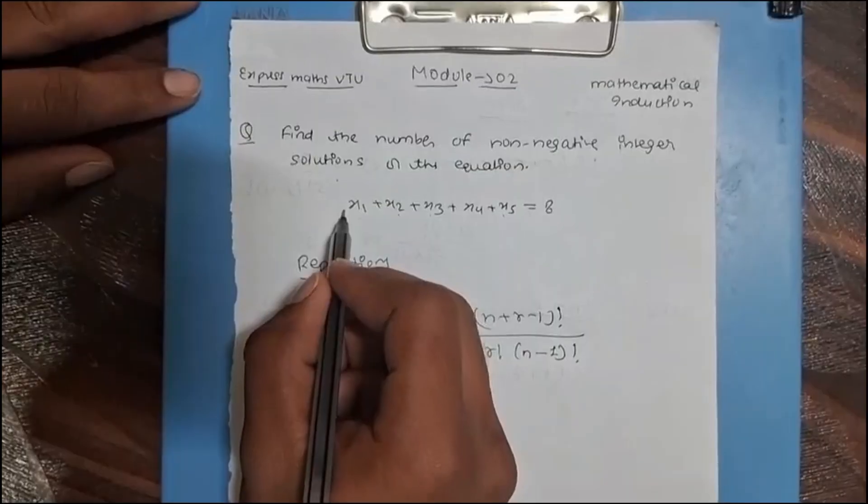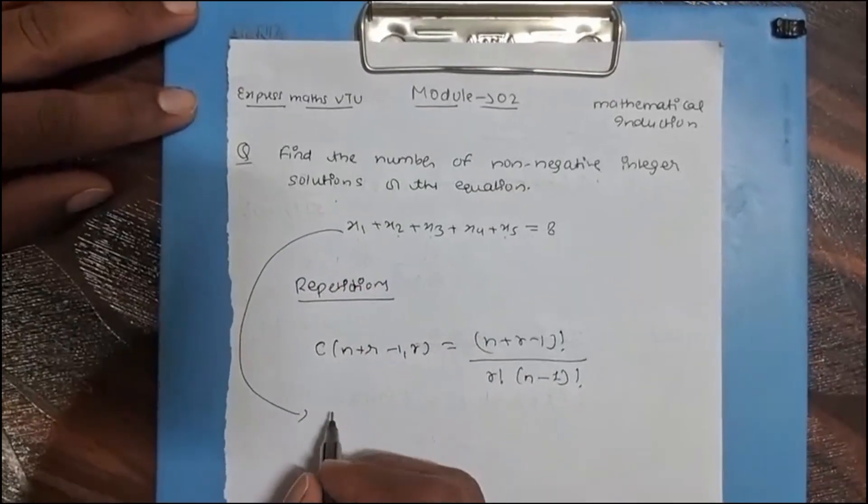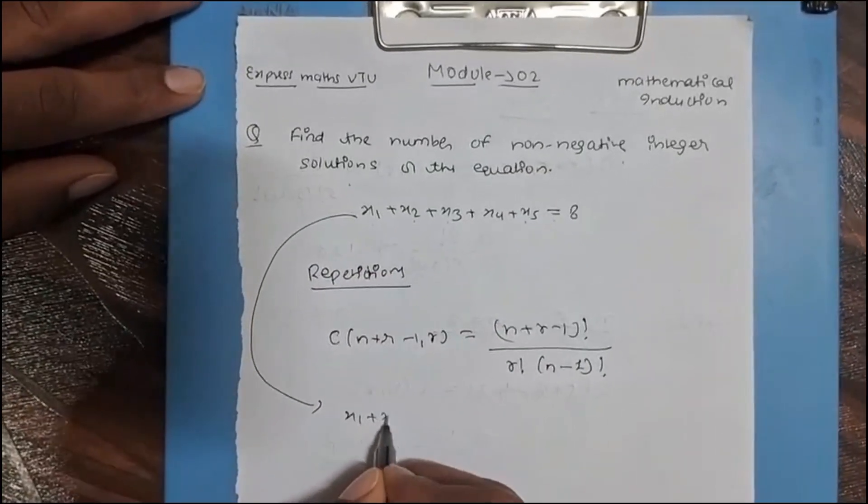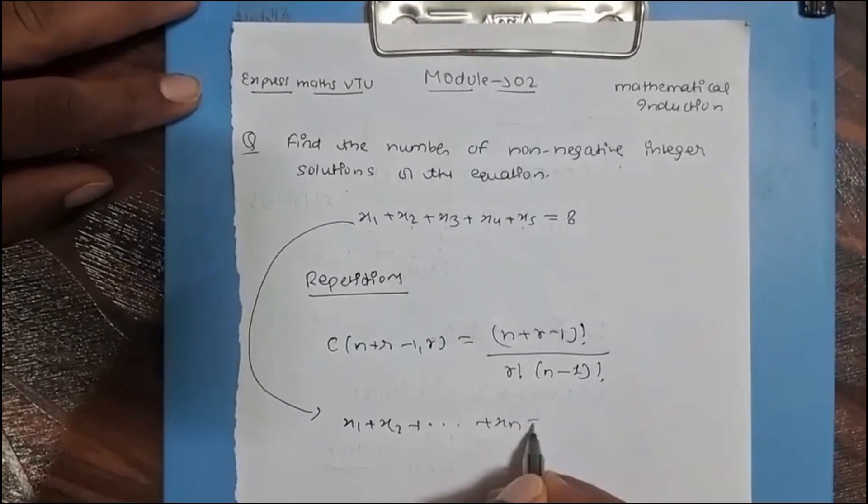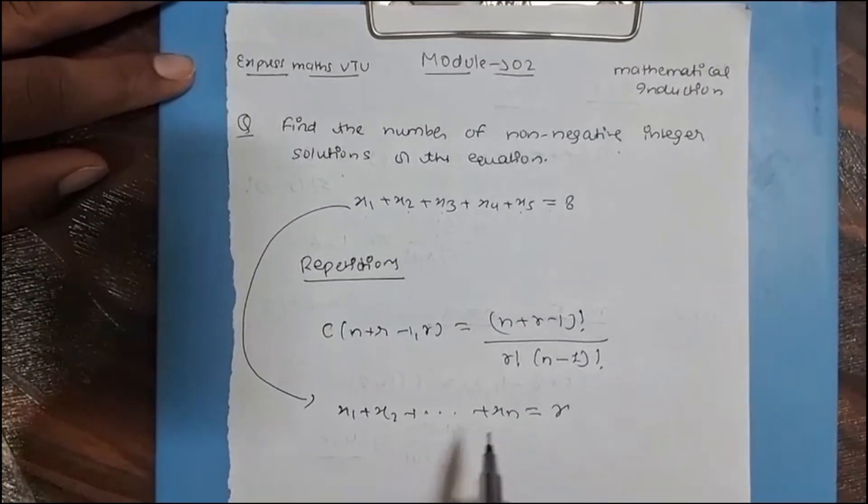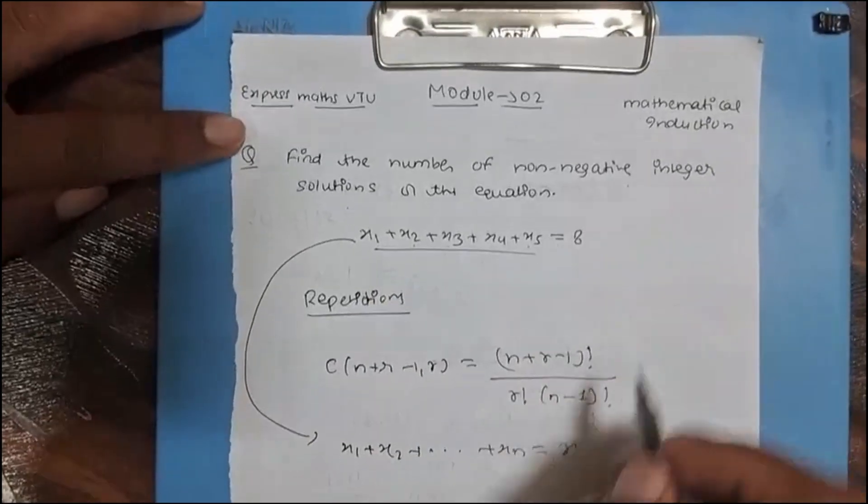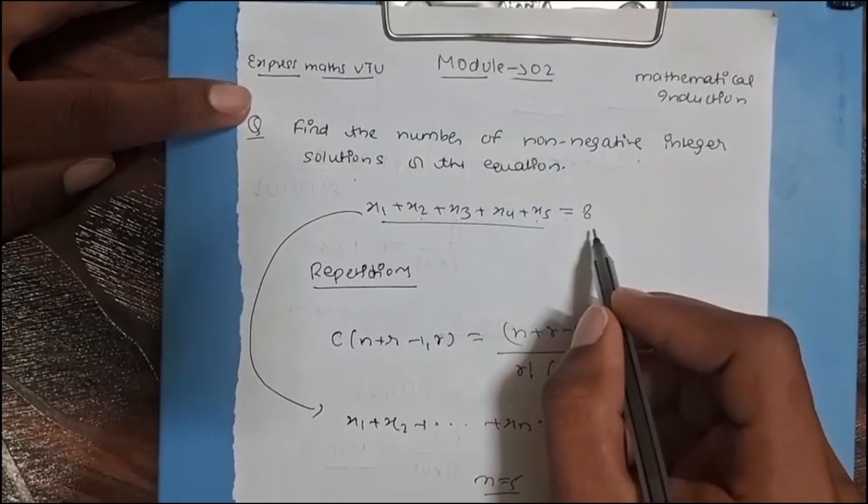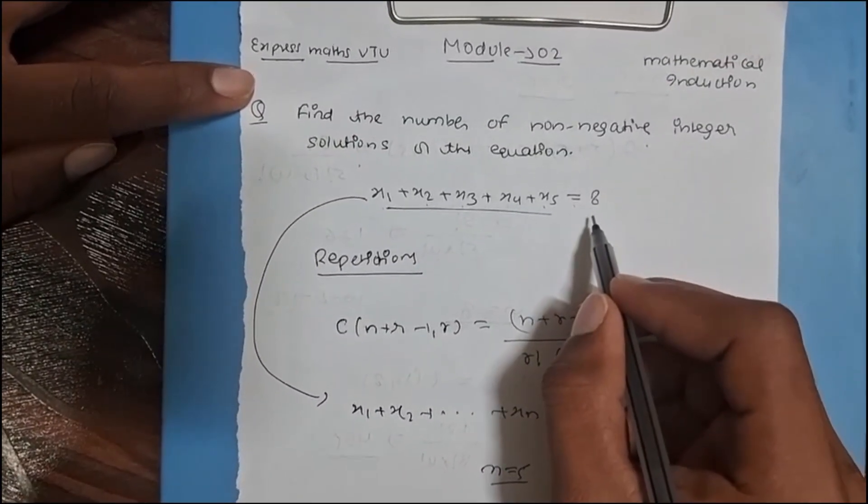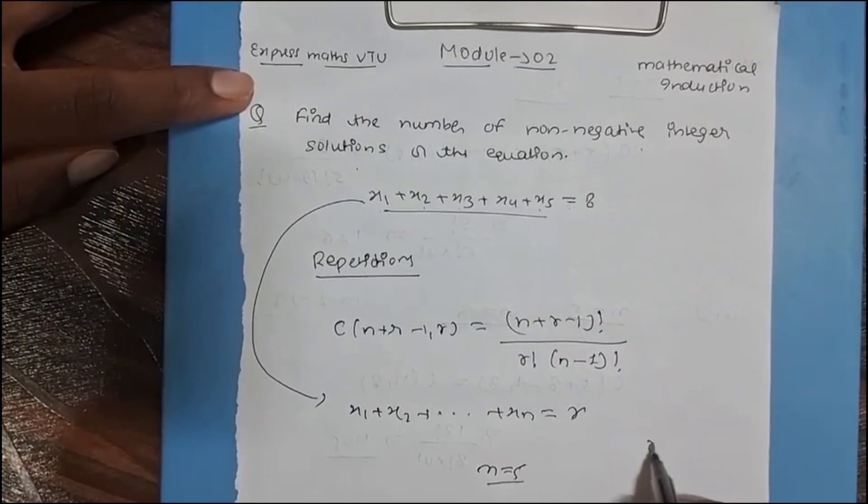The general form of this equation is x1 + x2 + ... + xn = r. Here we can clearly see that there are five terms, so n = 5. And we know that the sum of non-negative integers is 8, so here r value equals to 8.